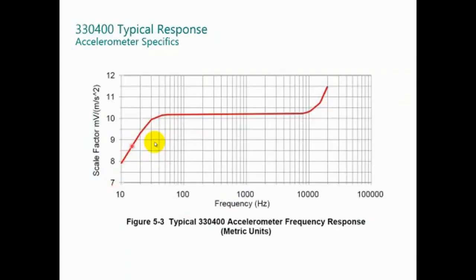Here is the typical response from a seismometer. To review the information, go to the manual. 330400 is the seismometer part number. You can see, starting at 10 Hz and the maximum is around 20 kHz. All the tests are made at 100 Hz per specification. This is specified in the transducer data sheet.